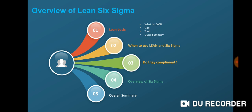What is Lean, what goal it brings, what tools it uses, and a quick summary. Then followed by when to use Lean and Six Sigma—that's also an interesting segment—and do they complement each other, Lean and Six Sigma? Then we will touch and go on an overview of Six Sigma, and then for all of these four layers we'll make a quick summary.